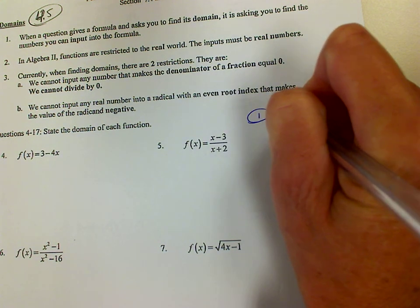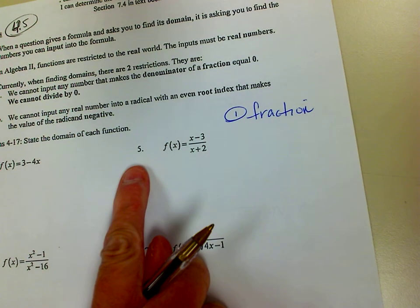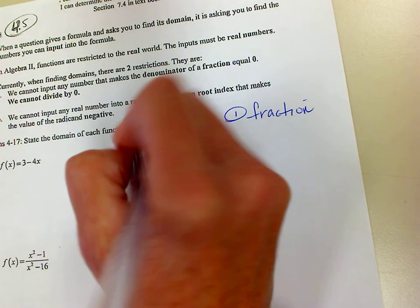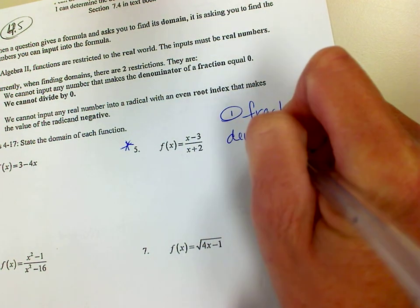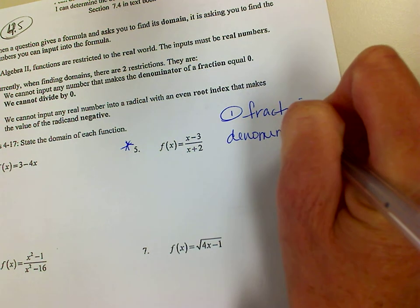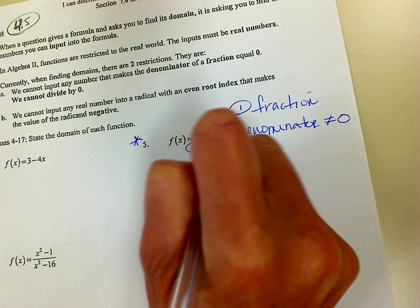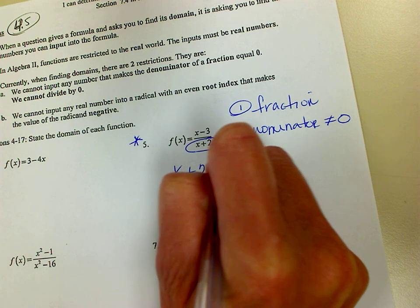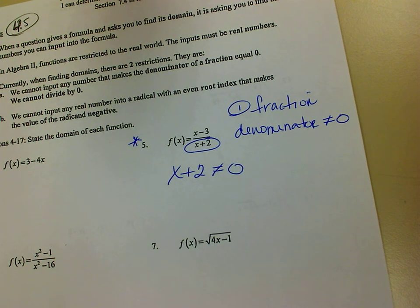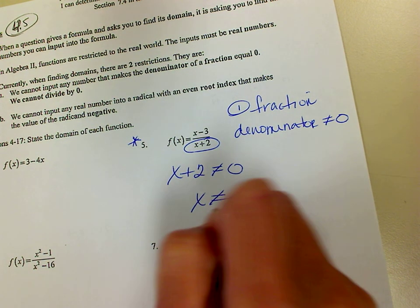The first thing to look for is if you have a fraction. So if you do have a fraction, like number 5, then the denominator cannot equal 0. So that means all of this — the denominator, which is x plus 2 — cannot equal 0. So now I just have to solve for x. If I subtract the 2 over, x cannot be negative 2.